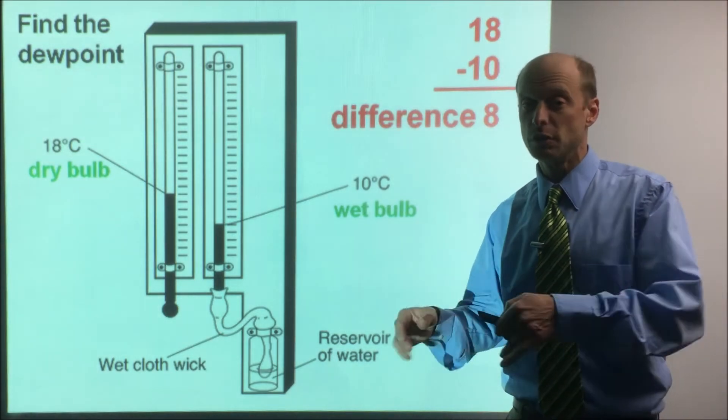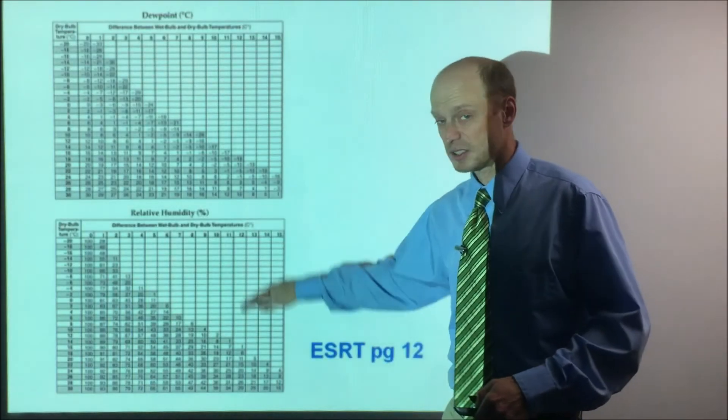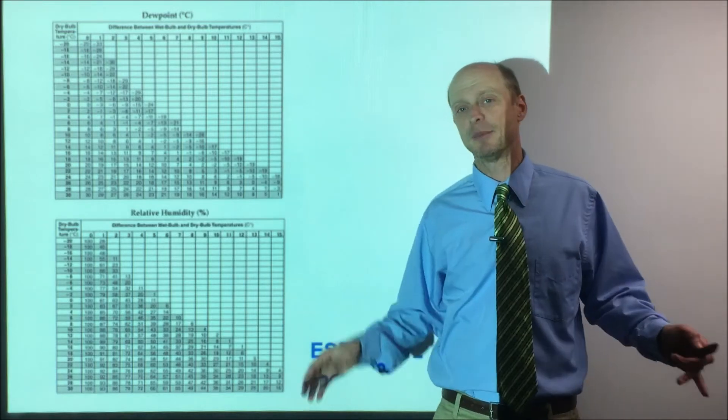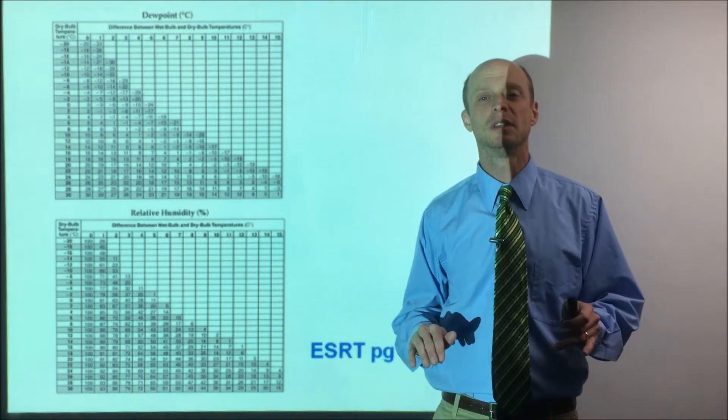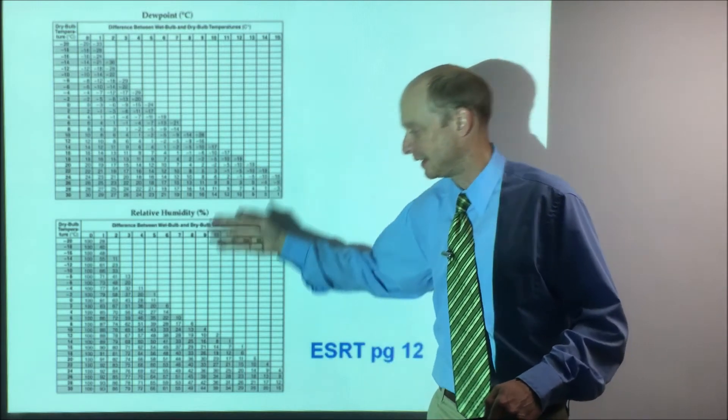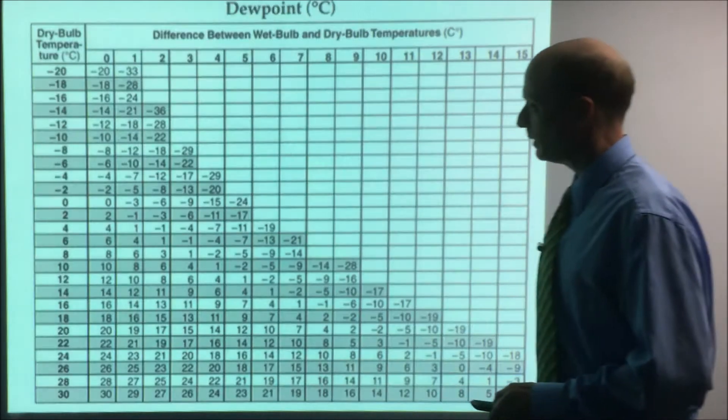Once you have that, you now need to go to the reference table, page 12. Now you also need to make sure there's two charts here, dew point and relative humidity. Now I understand it's very common to make a mistake. It's human error, but make sure double check you're going to the right chart. I've seen a lot of kids trying to get dew point and they go down here and just get it wrong. So the dew point is the top one.